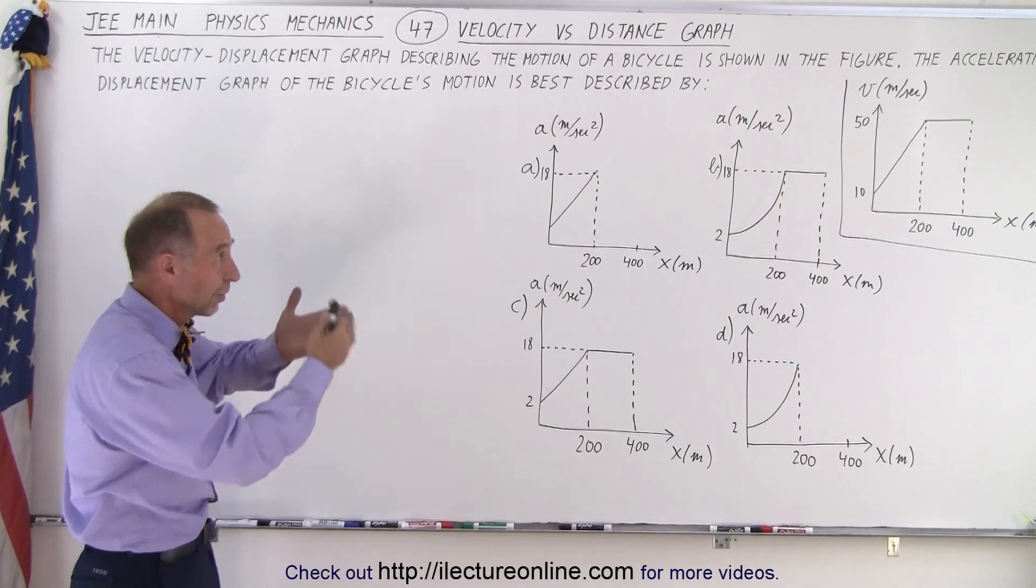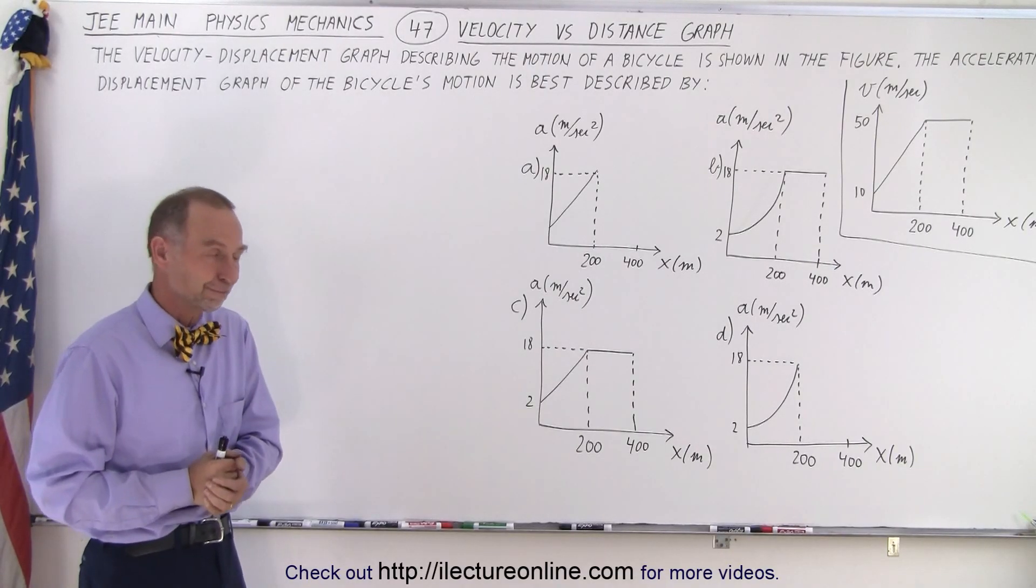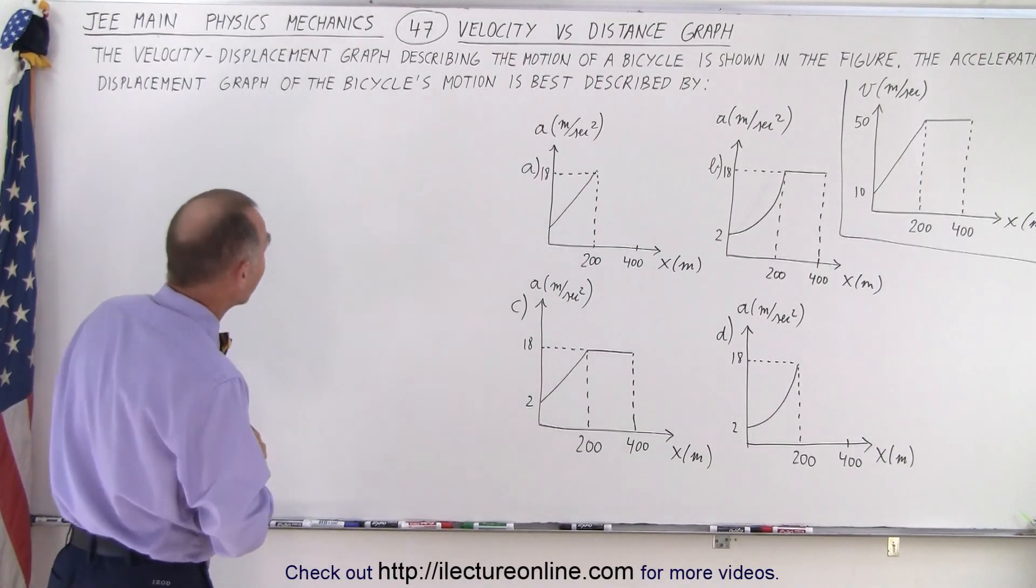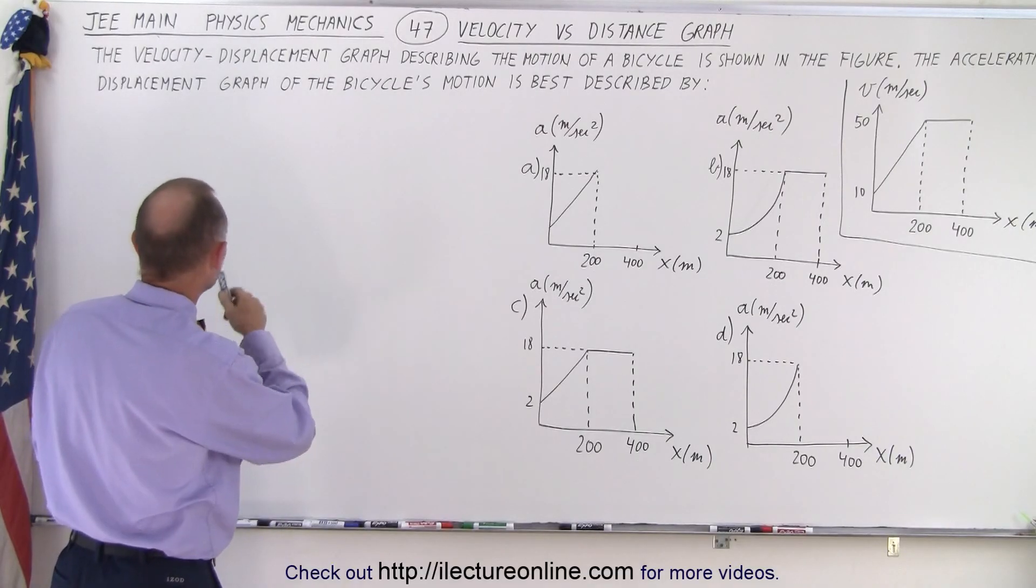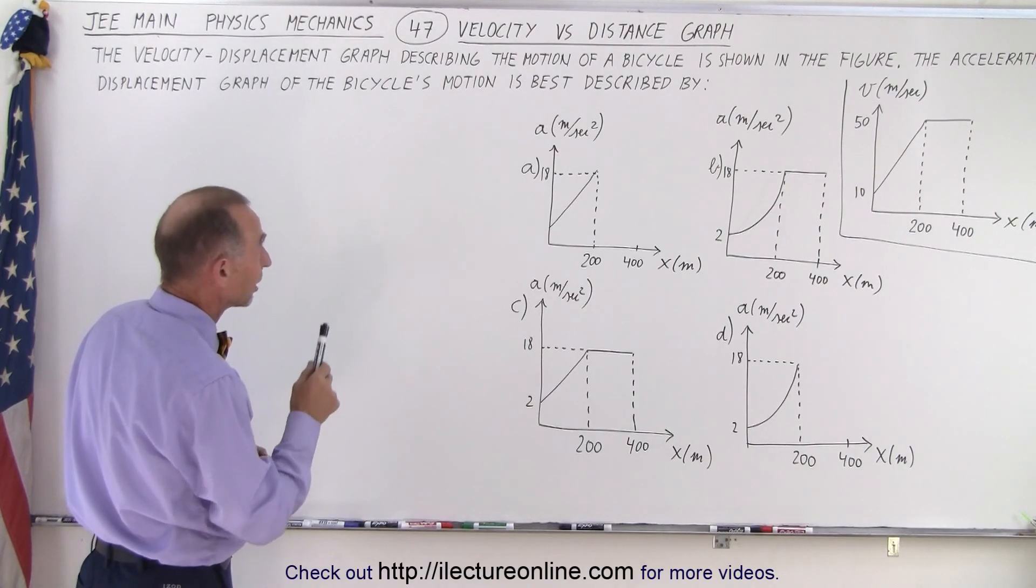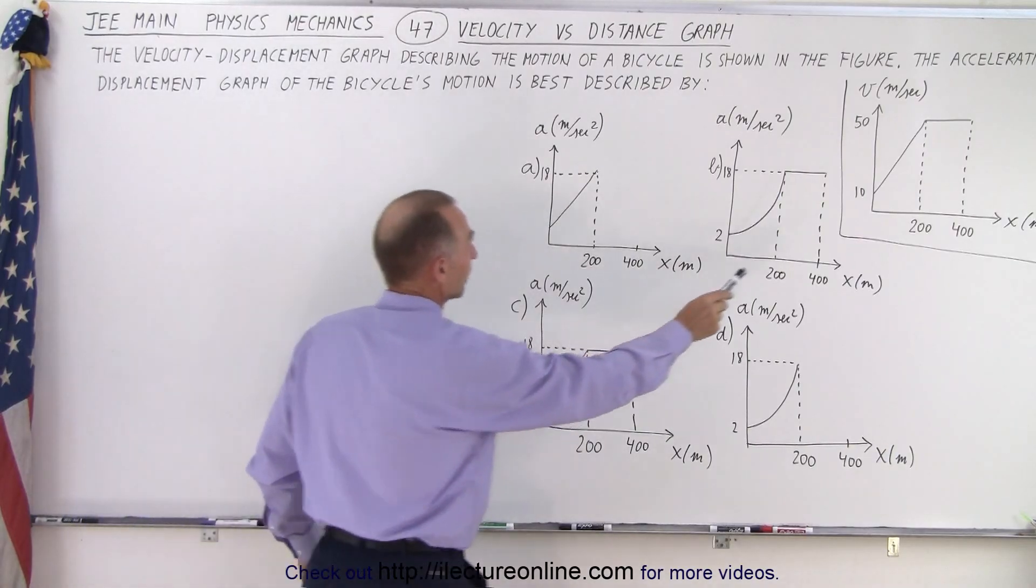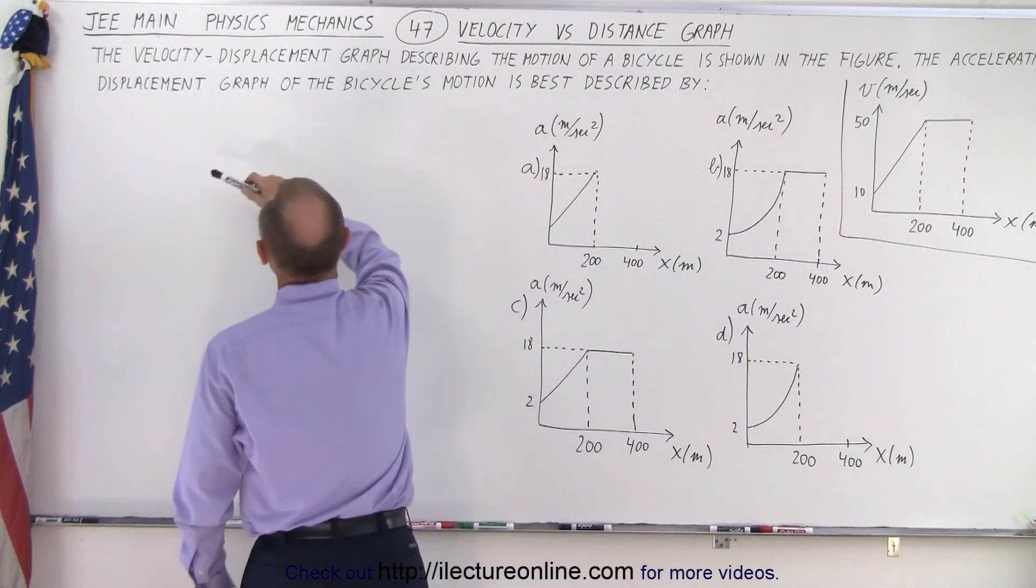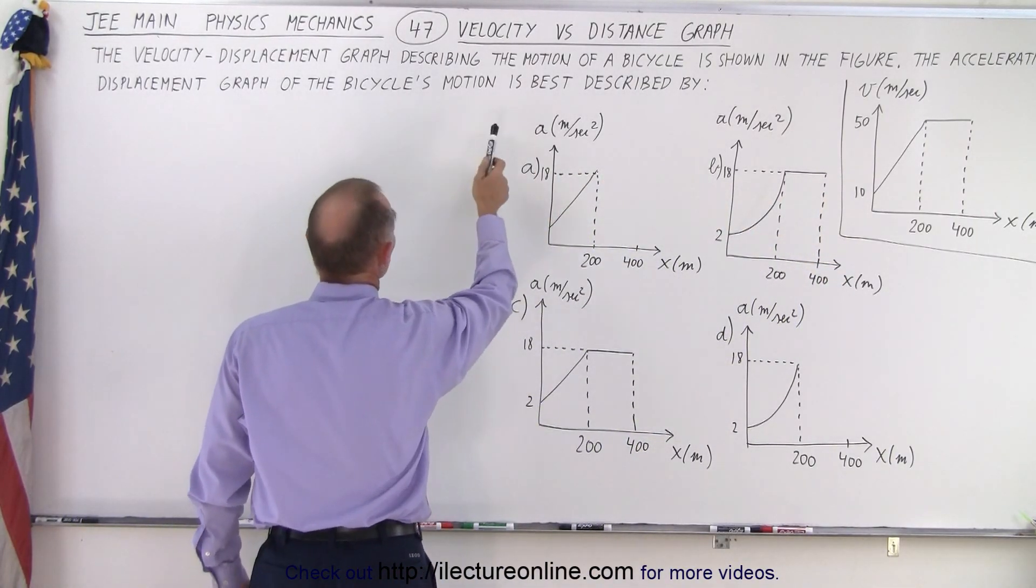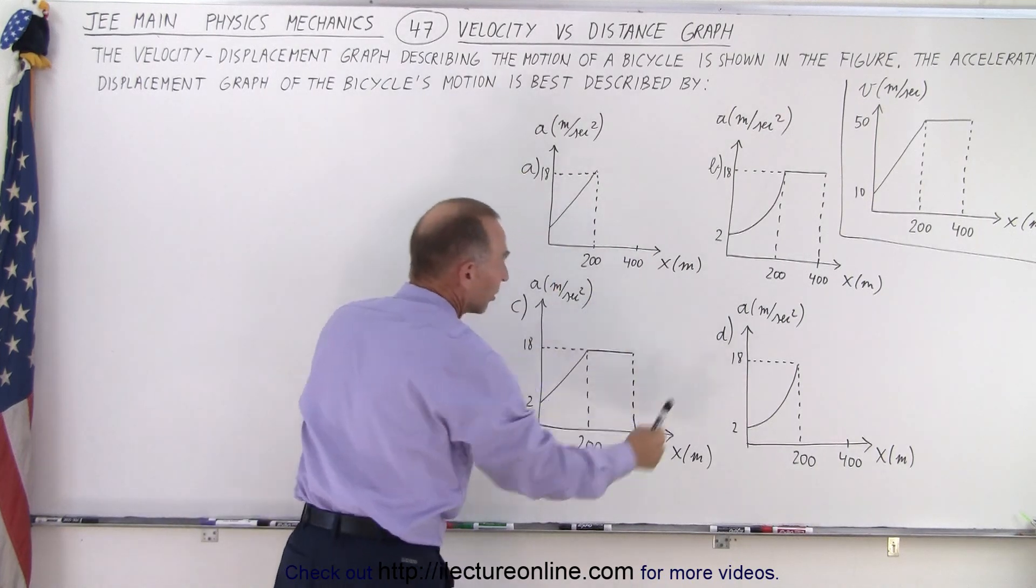So when was the last time that you saw a velocity versus displacement graph? Well, let's read the problem and see what we need to do. The velocity displacement graph describing the motion of a bicycle is shown in the figure right here. The acceleration displacement graph of the bicycle's motion is best described by one of these four answers.